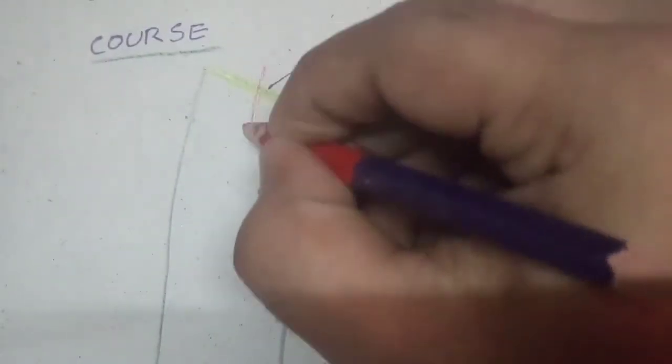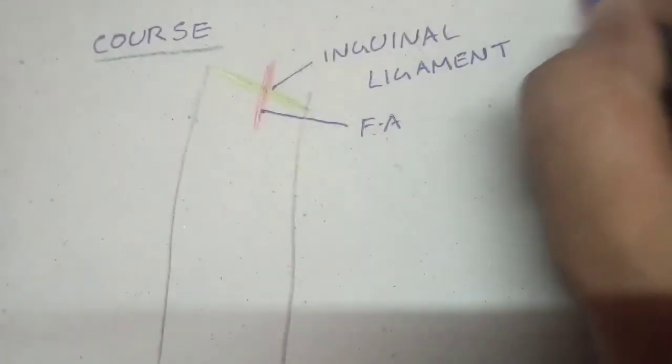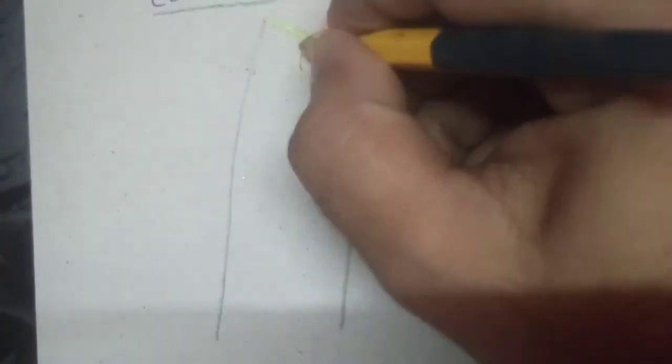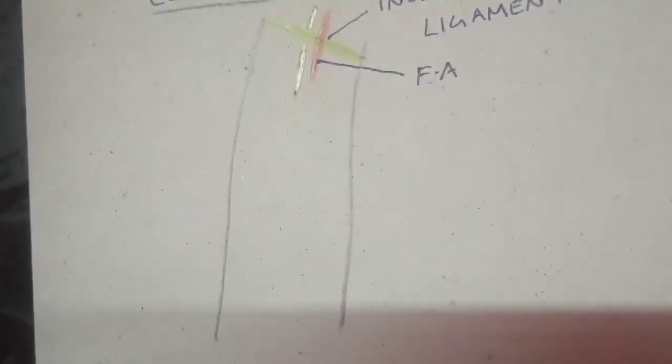The red line is the femoral artery. You all know about the contents of the femoral triangle — the femoral nerve is on the lateral side and the femoral artery is on the medial side. The course of the femoral nerve: it enters the femoral triangle by passing behind the inguinal ligament, and it is lateral to the femoral artery, as you can see in the diagram.